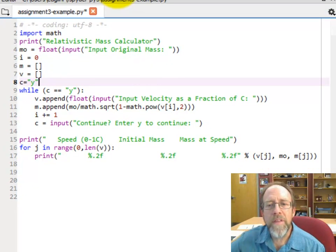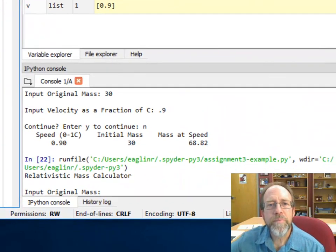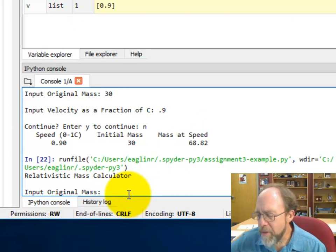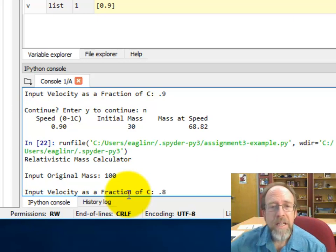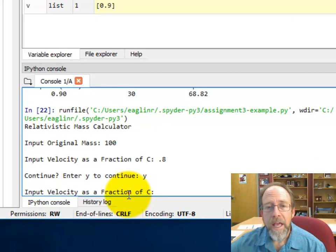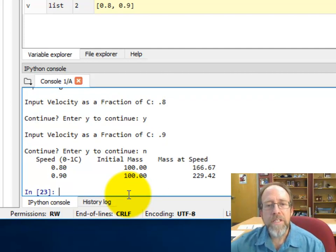So if I run this, and I'm going to move this over here so that you can see it. If I run this, input original mass. Well, I'm going to make the original mass 100. Now, input velocity is a fraction of c. Let's do 0.8. And let's do one more value, y. And now I'm going to input 0.9. That's velocity is a fraction of c, the speed of light. And now I don't want to continue. N.